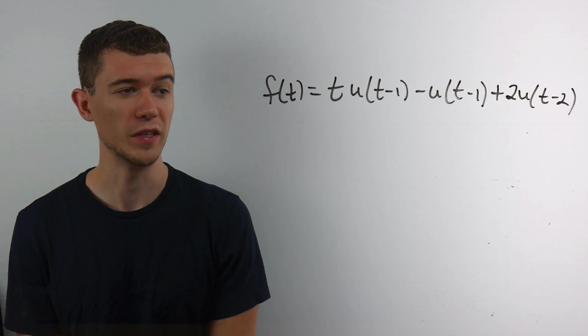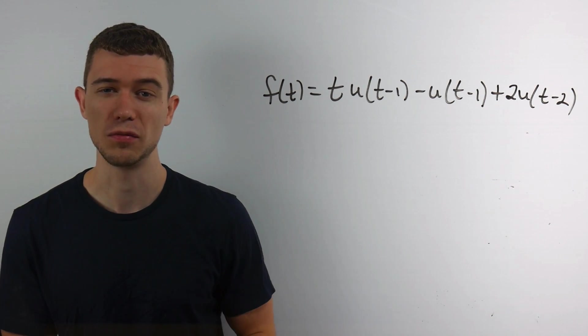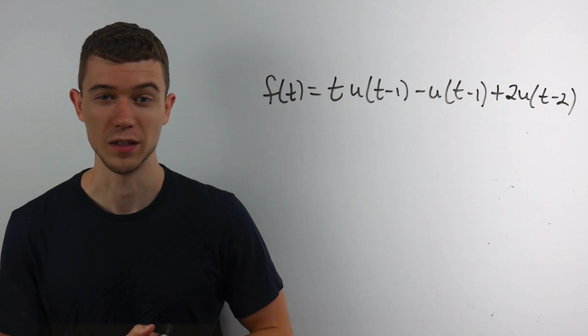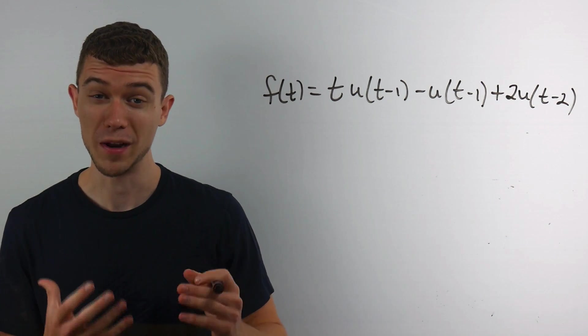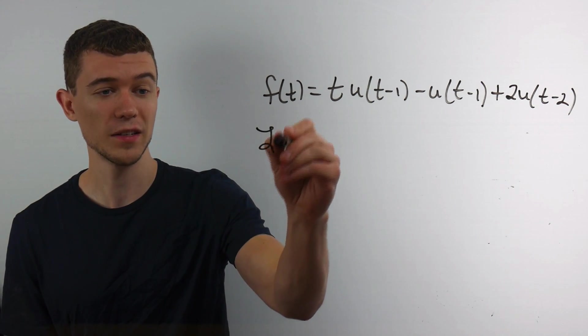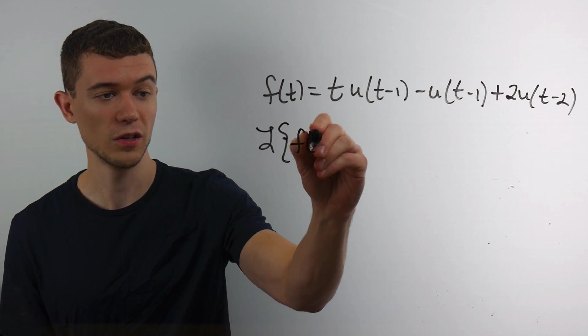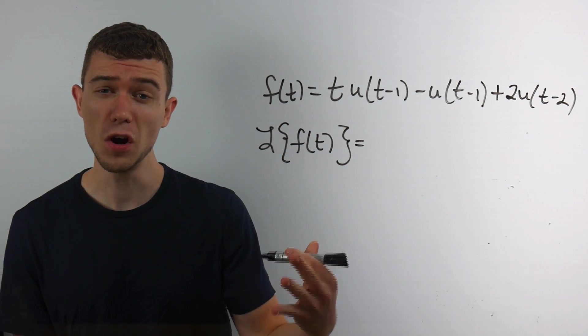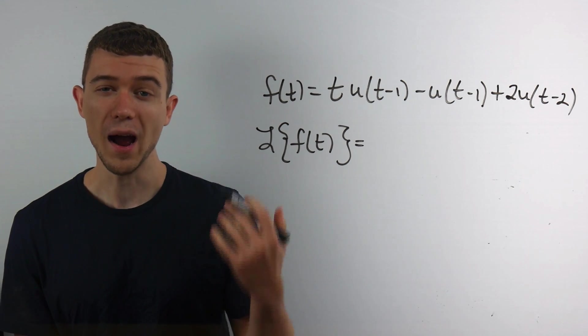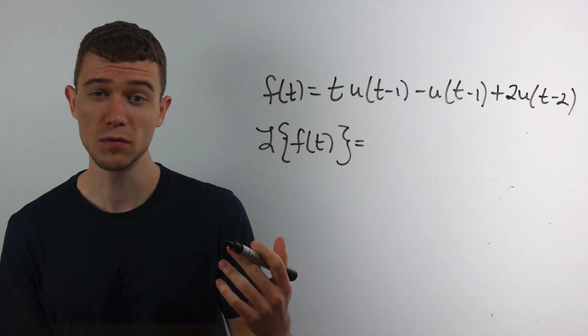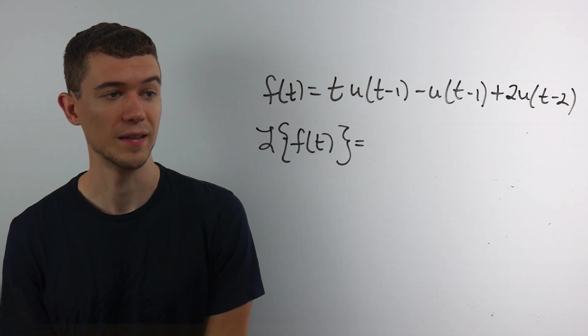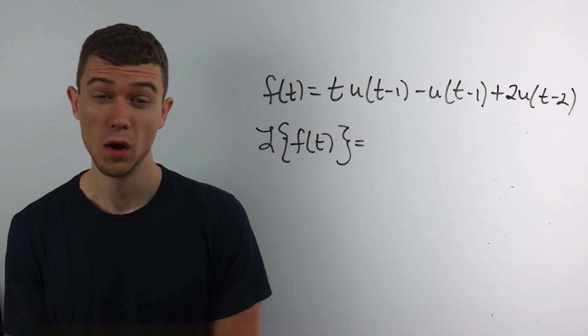Again, you could factor out this u of t minus 1. I just did it here for the sake of what makes sense to me doing the Laplace transforms. We're finally ready to do that, to take the Laplace transform of our function. And to do that, you have to memorize or you have to know or be able to look up how do you take Laplace transforms of functions when they have the step function attached to them.